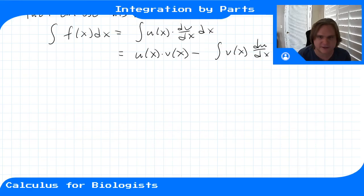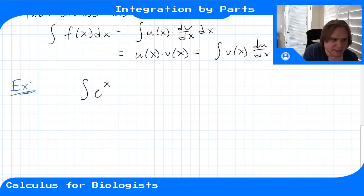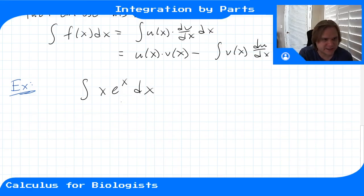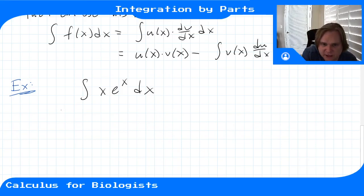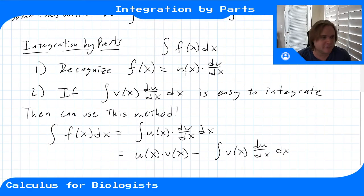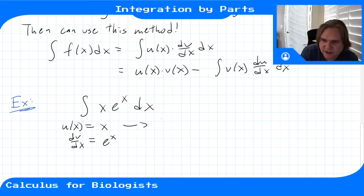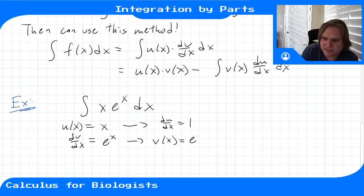Let's do an example: the integral of x·eˣ dx. This looks like there's a product in there, so if we can write it as u and dv, we'd be in good shape. Let's try u(x) = x and dv/dx = eˣ — we want to recognize this as the product of a function u and a derivative dv/dx, preferably where we know the antiderivative. If u = x, then du/dx = 1, and if dv/dx = eˣ, then its antiderivative v = eˣ.